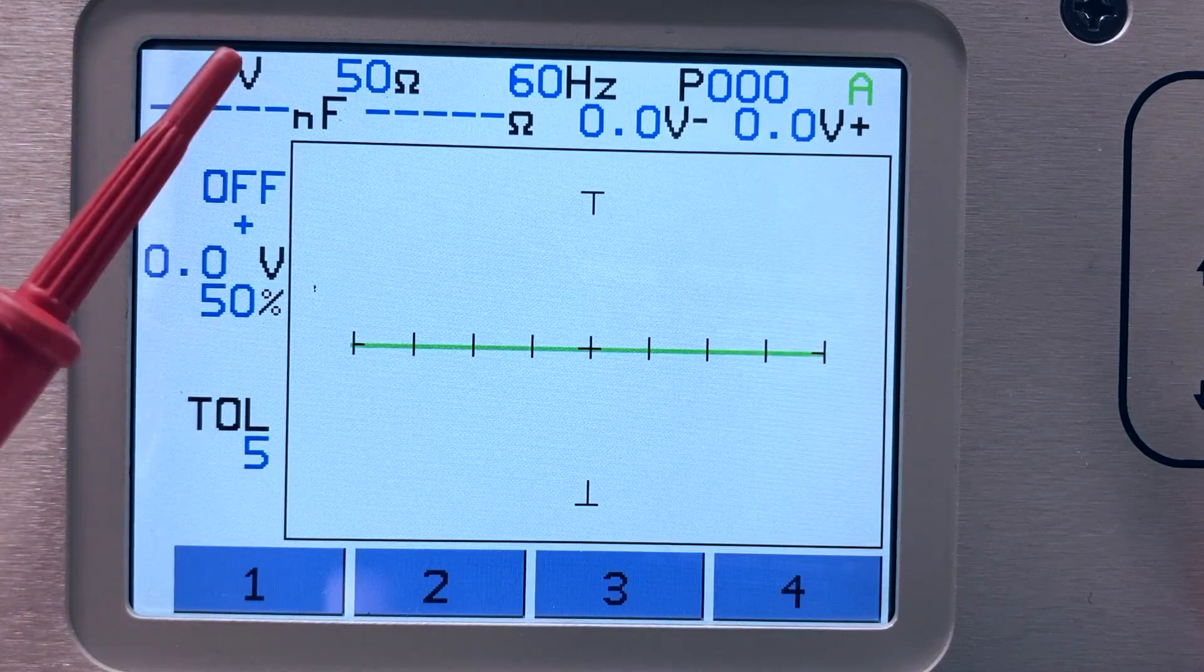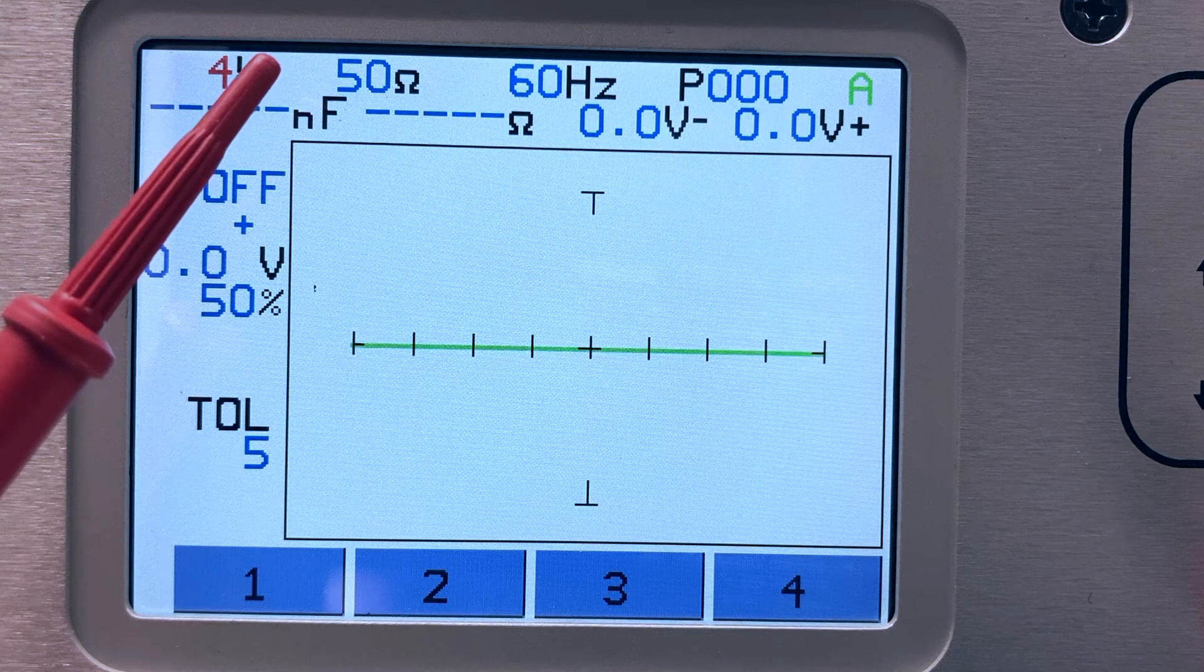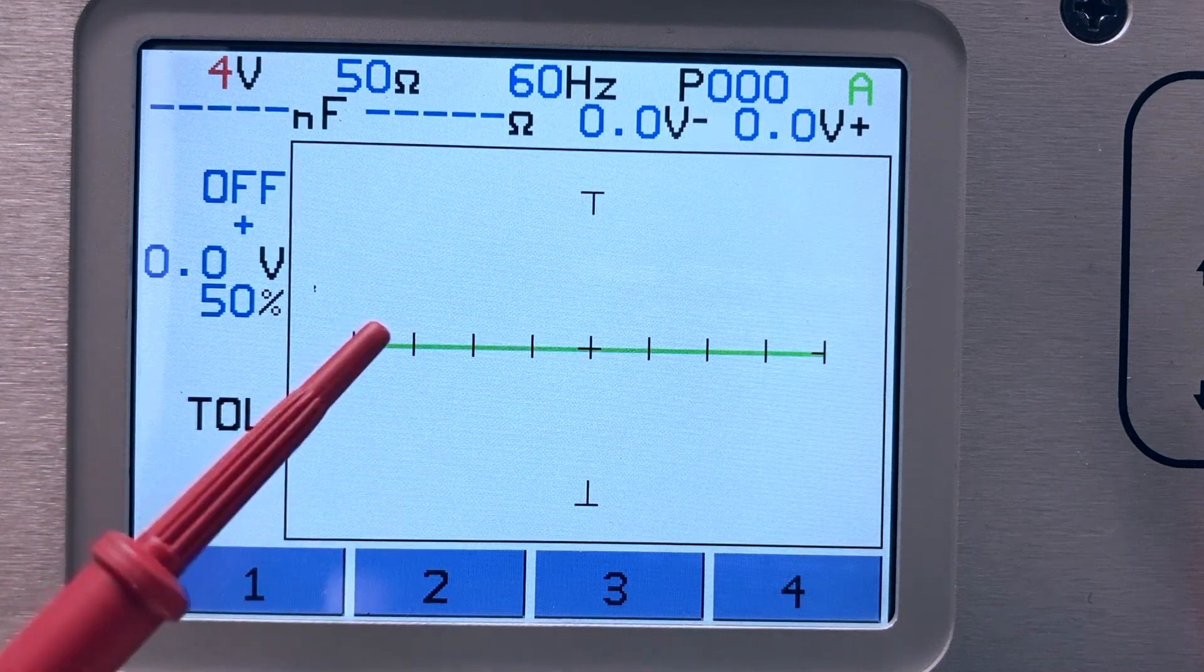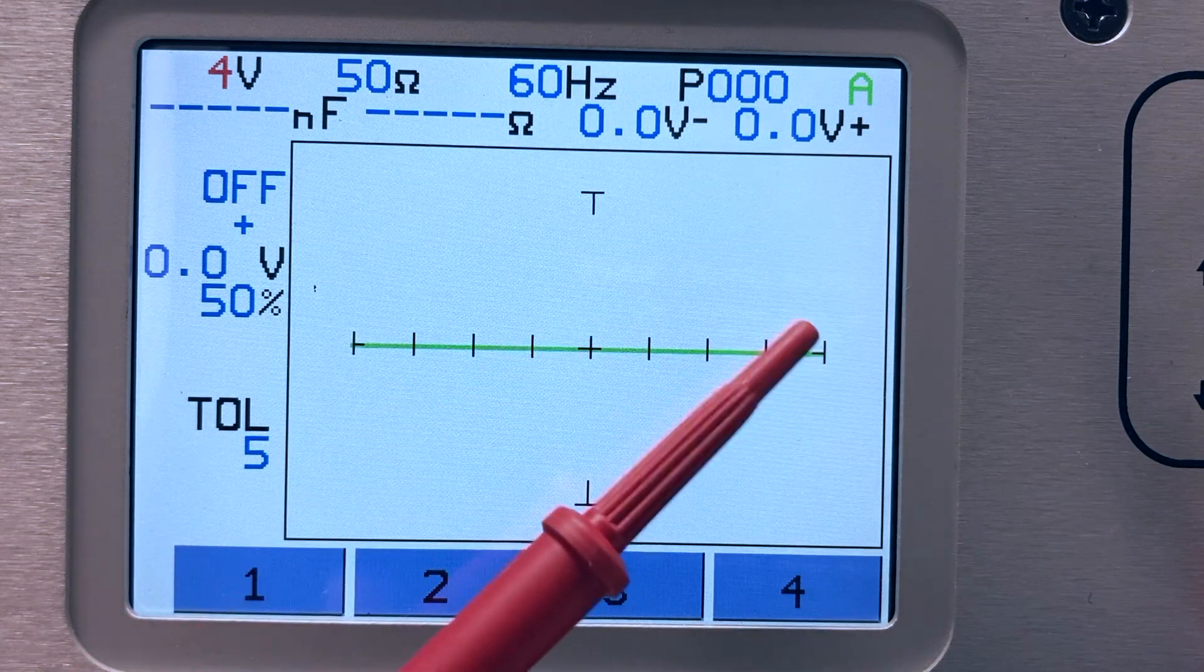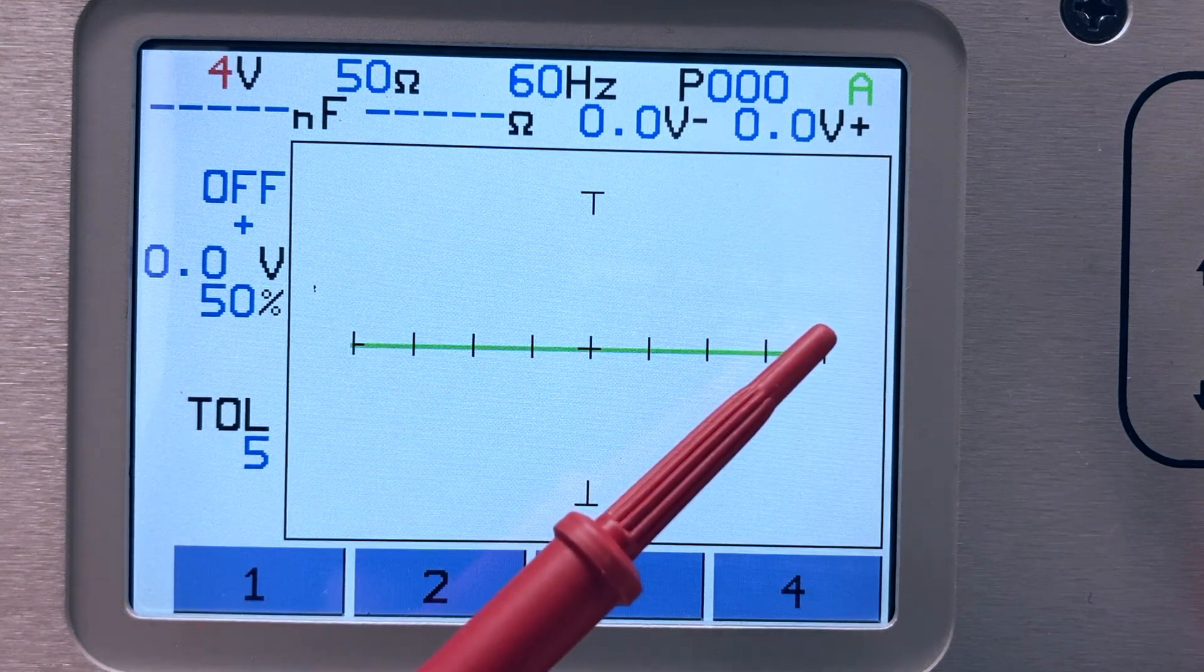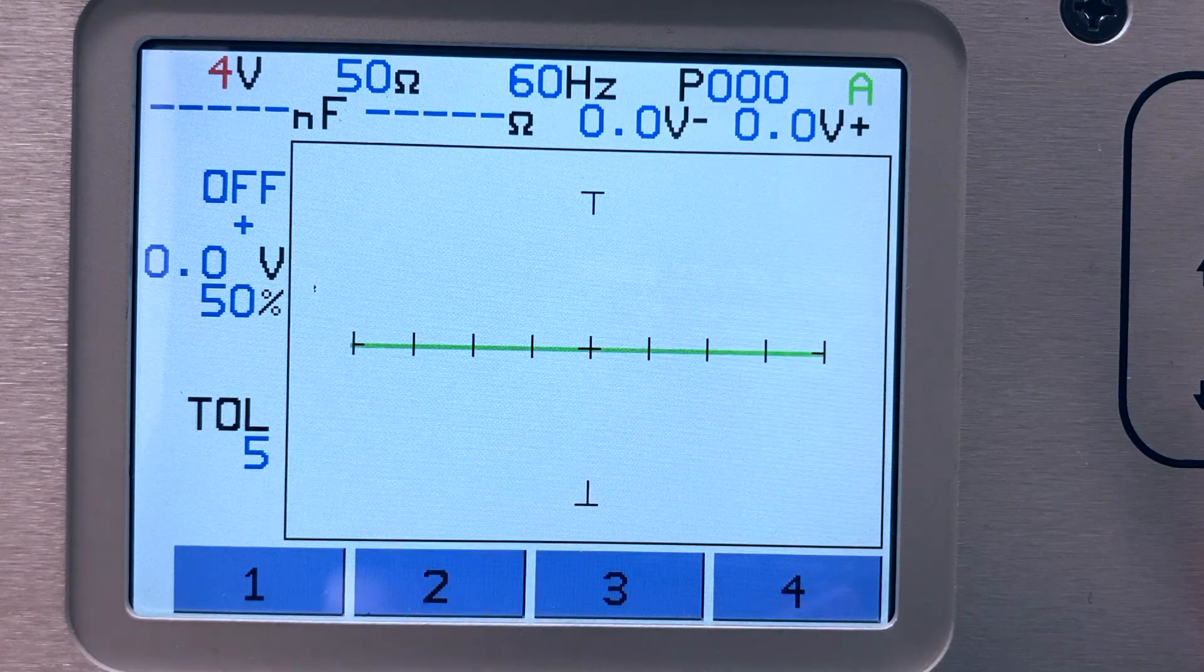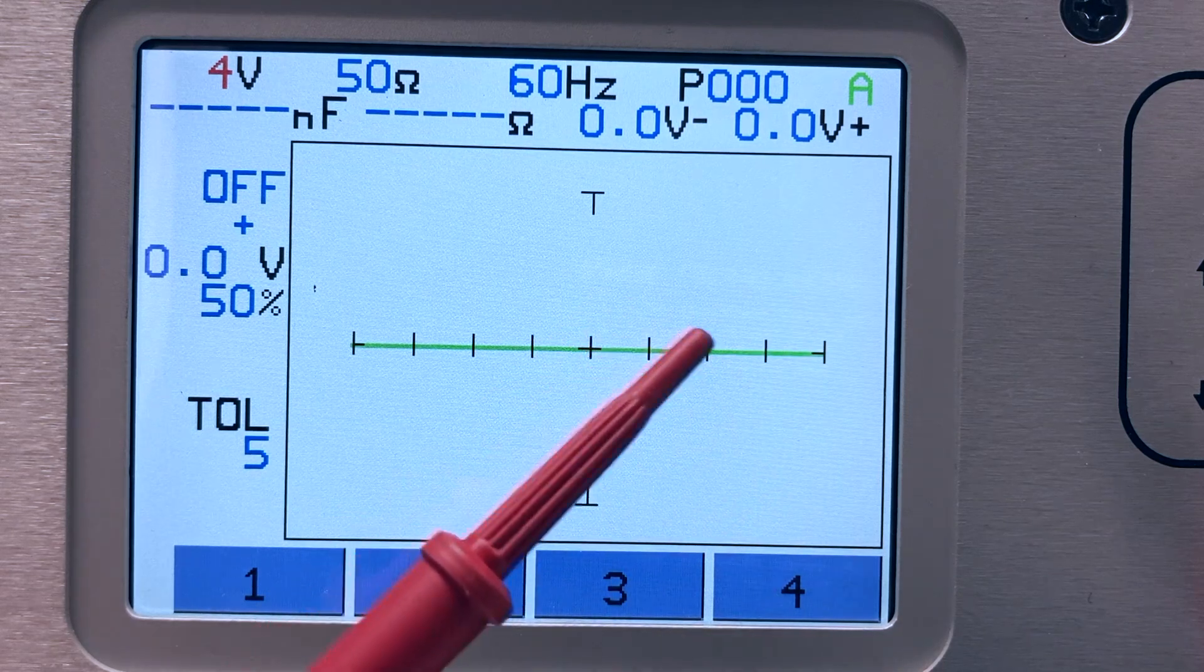As an example, if the tracker voltage is set to 4 volts, then the left end of the graticule is negative 4 volts and the right end is positive 4 volts. Since each side of the graticule is divided into four divisions, this means that each division is worth 1 volt.